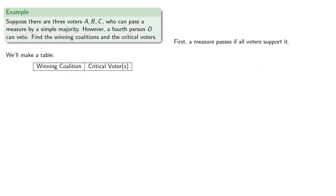So first, a measure passes if all voters support it. So that's the winning coalition A, B, C, and D.